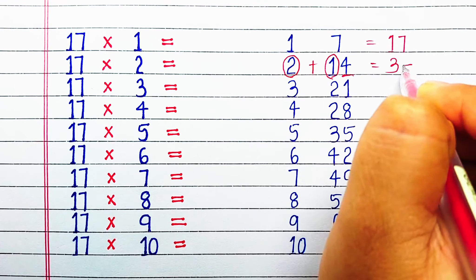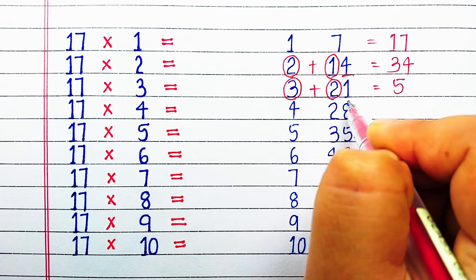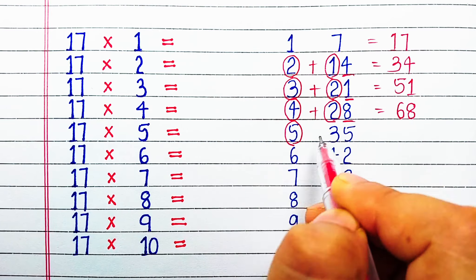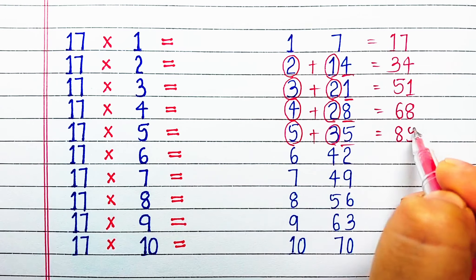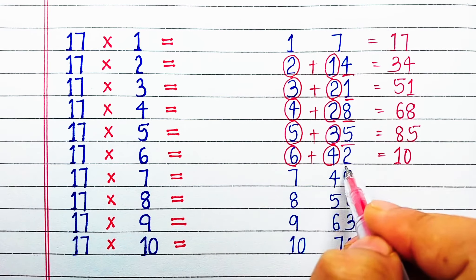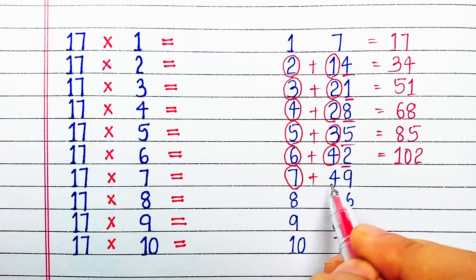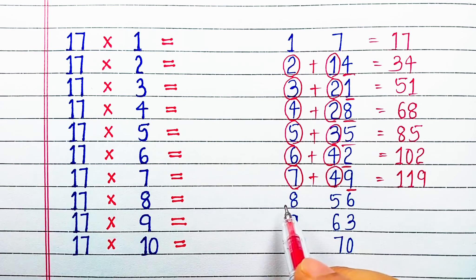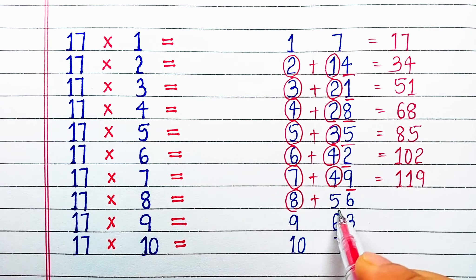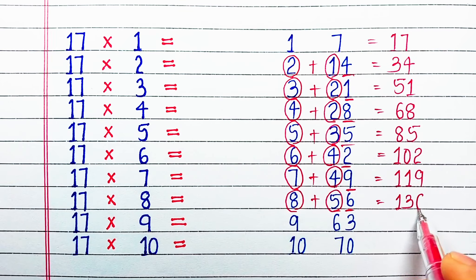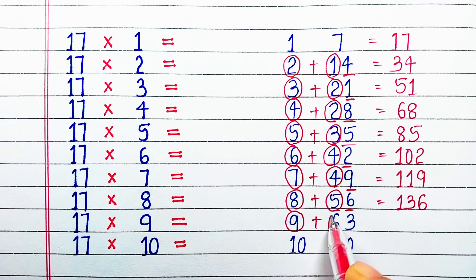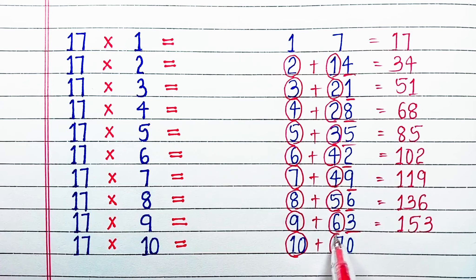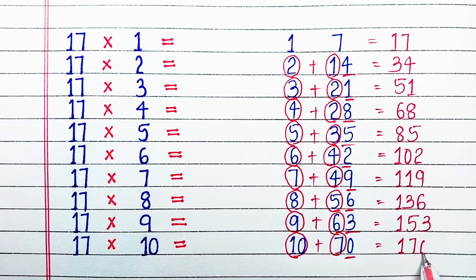Then 2+1=3 and 4, making 34. Then 3+2=5 and we write 1 as it is, making 51. Next 4+2=6 and 8, making 68. Then 5+3=8 and we write 5 as it is, making 85. Then 6+4=10 and we write the unit digit 2, making 102. Next 7+4=11 and we write 9 as it is, making 119. Then 8+5=13 and we write unit digit 6, making 136. Next 9+6=15 and we write 3 as it is, making 153. Now 10+7=17 and we write 0, making 170.